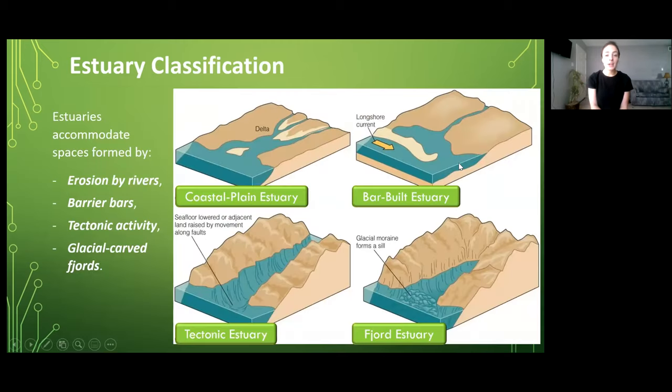So let's get into some background over estuary classification. There are four different types of estuaries shown here in this figure. We have coastal plain estuaries which are formed by erosion by rivers. Then we have bar built estuaries which are formed because of barrier bar formation which is a wave dominated system. Then we have tectonically formed estuaries and finally glacially formed fjord estuaries.